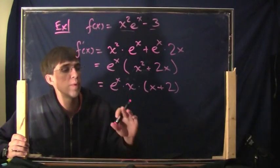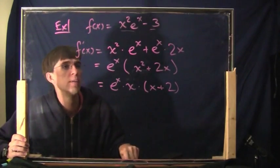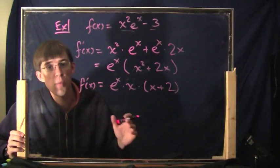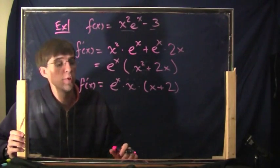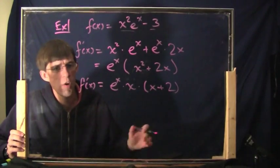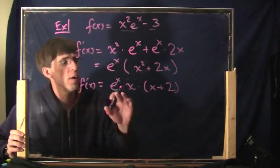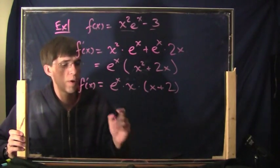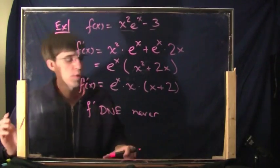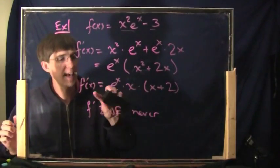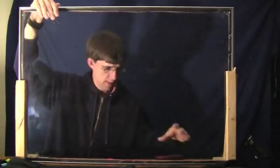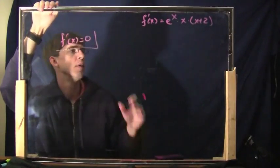What do we do next? We find the critical numbers — points where the derivative is zero or where the derivative does not exist. It's easy to say where the derivative does not exist: you look for points which make zero in the denominator, or zeros inside a log or something like that. There's no such issue here — e to the x, you can plug whatever x you want in. So f prime does not exist: never. We do not need to worry about points where the derivative does not exist.